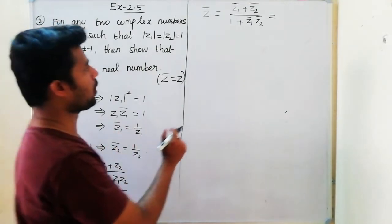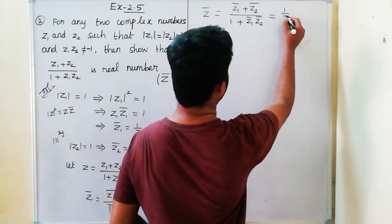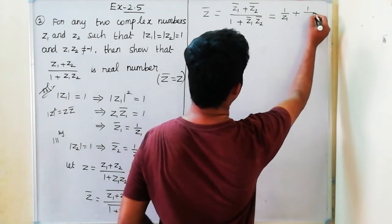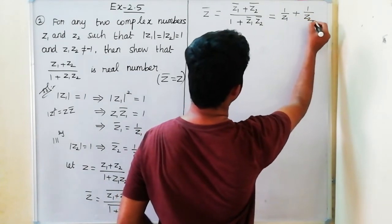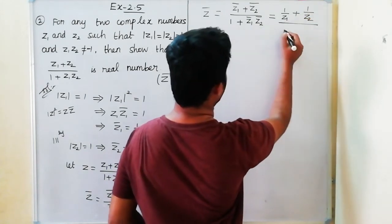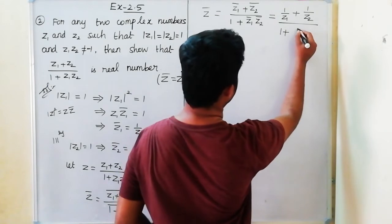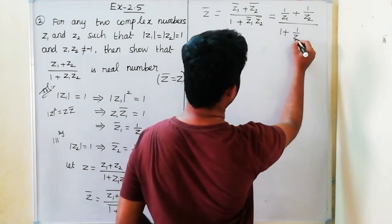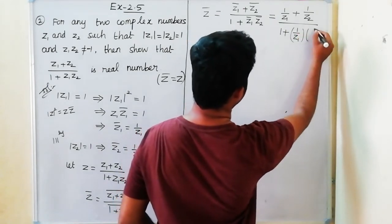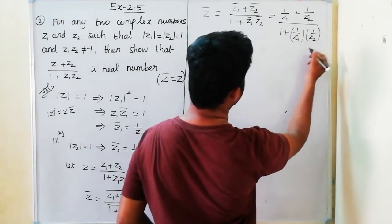Now substitute z̄1 equals 1/z1 and z̄2 equals 1/z2. So we get (1/z1 plus 1/z2) divided by (1 plus (1/z1)·(1/z2)).